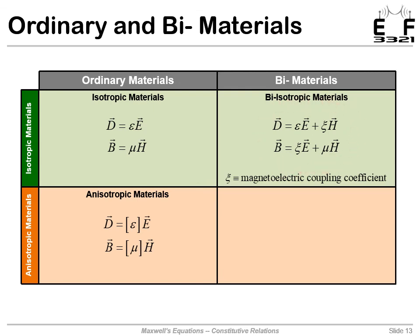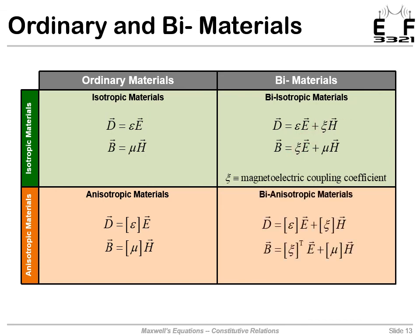When an electric field directly induces a magnetic field, we call this a bi-isotropic material, and this coupling term is called the magneto-electric coupling coefficient — notice it's the same term appearing in both constitutive relations. Then of course the magneto-electric coupling coefficient, permittivity, and permeability could also be tensors, giving us a bi-anisotropic medium. The magneto-electric tensor is the same in both constitutive relations other than a transpose operation. In this class we focus on the simple ordinary isotropic constitutive relations, but there is a lot more out there.